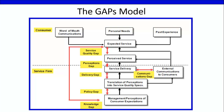GAP 2: The Policy GAP. The Policy Gap is the difference between management's understanding of customers' expectations and the service standards they set for service delivery. We call it the Policy Gap because management has to make a policy not to deliver what they think customers expect. Reasons for setting such standards below customer expectations are typically cost and feasibility considerations.